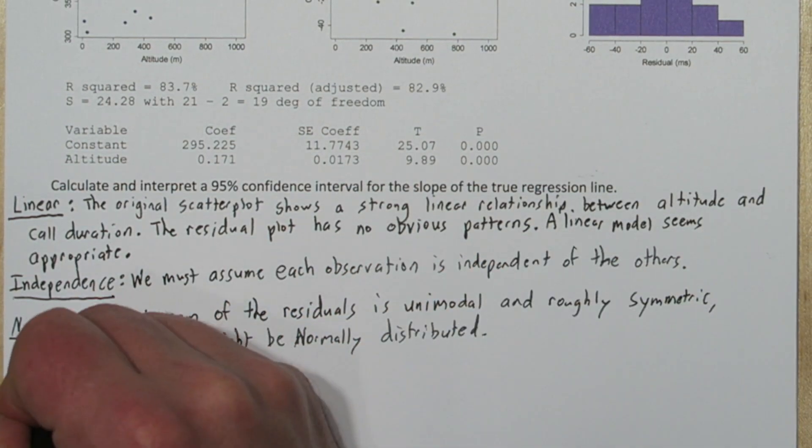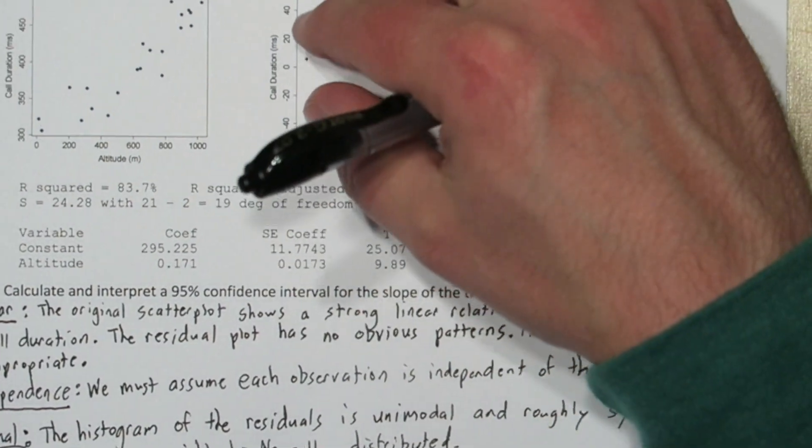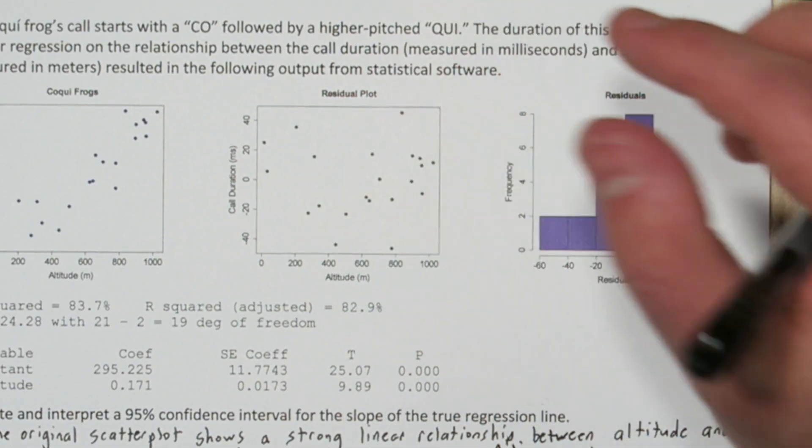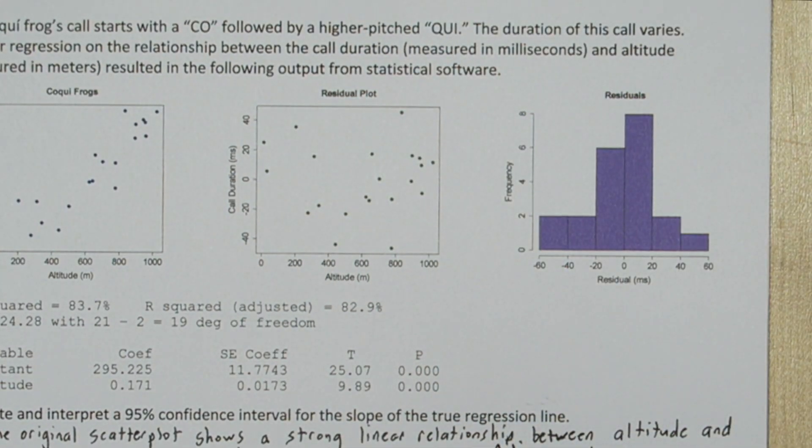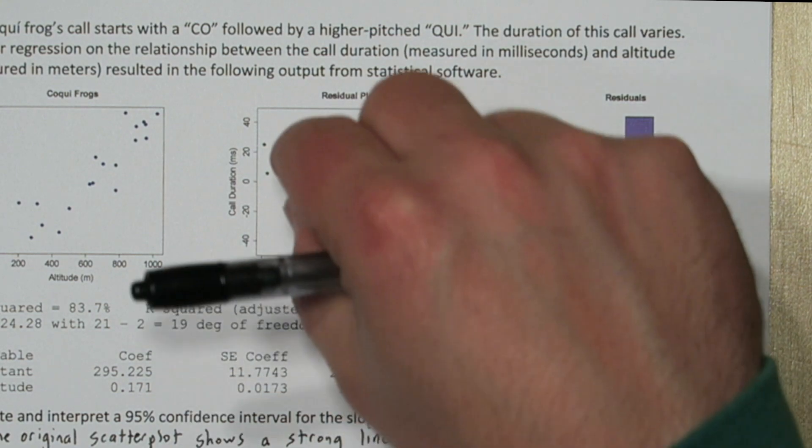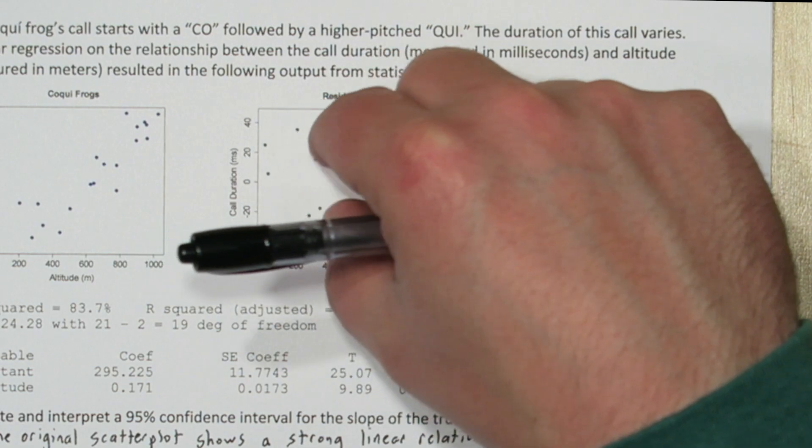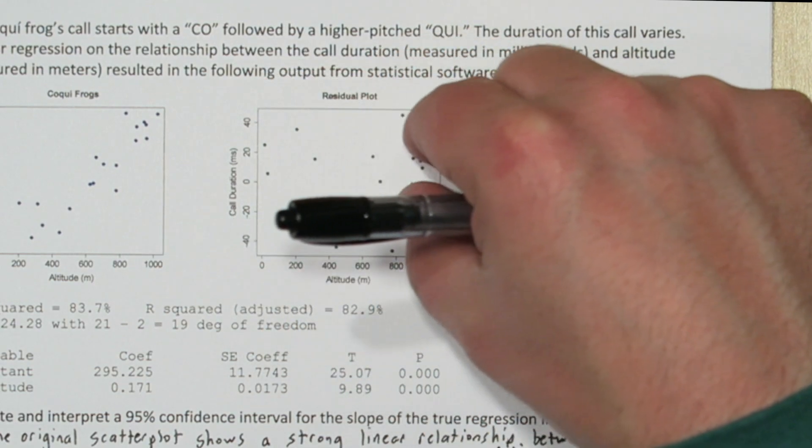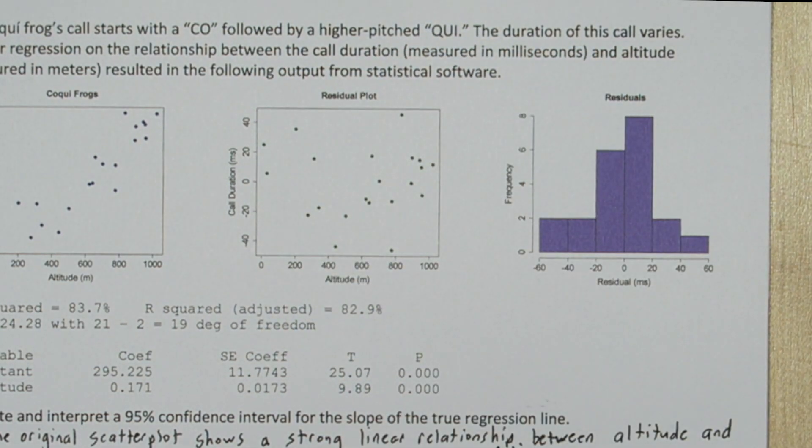The next condition is the equal variance condition. We have to look at the residual plot, and we should see random scatter throughout all the altitudes. And that's what I see, there's no obvious patterns here. So we'll say the residual plot shows random scatter and no fanning. Fanning is when the residuals build from small to large, or from large to small. And we don't see that here. We see equal variance throughout the altitudes.